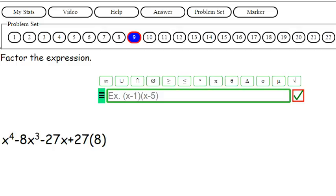X to the fourth. So we have x^4 minus 8x^3 minus 27x plus 27 times 8. Not sure why that didn't get multiplied together. Probably going to try to help us out somehow.